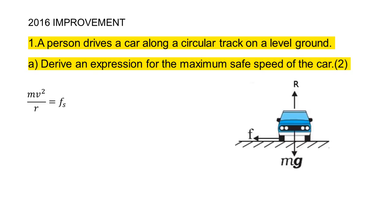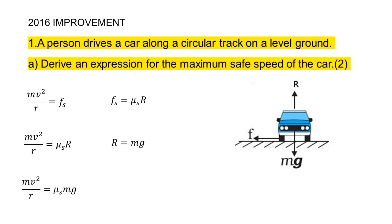For a circular level road, mv²/R = Fs = μs·mg, so mv²/R = μs·mg. Cancelling m, we get v² = μs·Rg, therefore v = √(μs·Rg). This is the maximum safe speed on a level circular road.